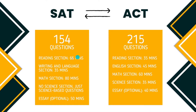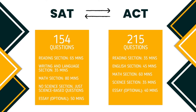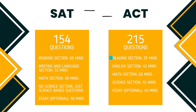The SAT consists of a reading section, a writing and language section, as well as a math section. They don't have a dedicated science section, but they do have science-based questions as part of the exam. There's also an optional essay at the end. Meanwhile, the ACT has four sections: reading, English, math, and science, with an optional essay too.